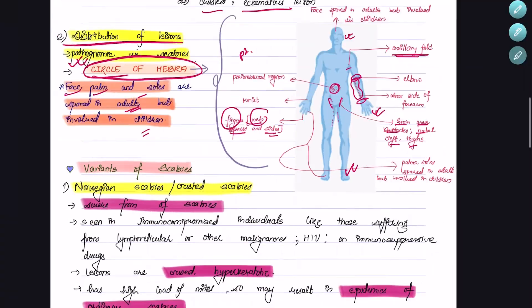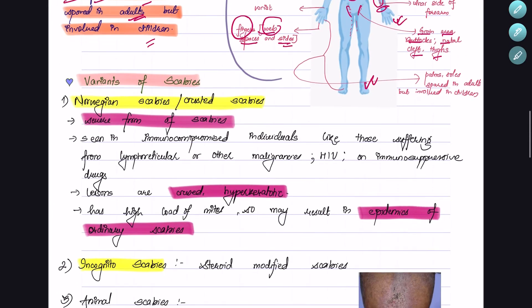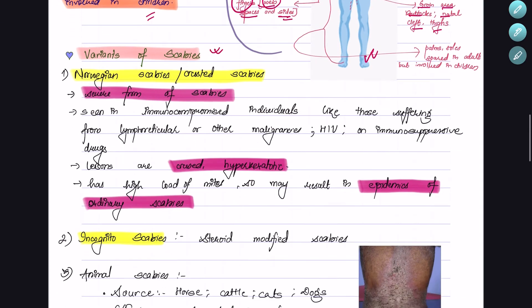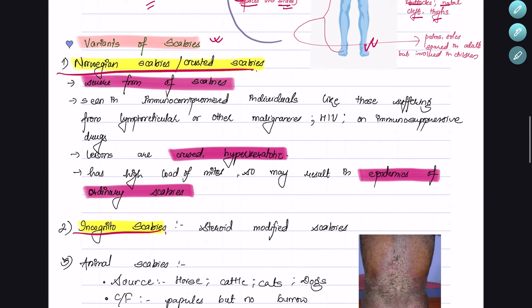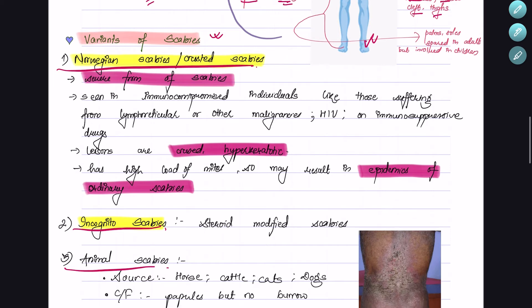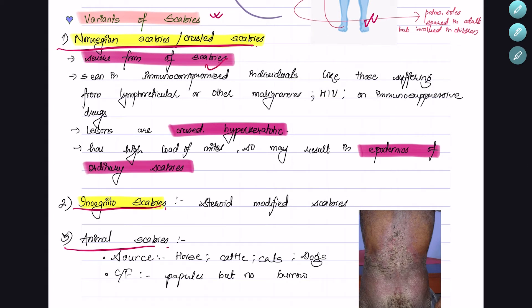Talking about the variants of scabies, there are three types: Norwegian scabies, incognito scabies, and animal scabies. Norwegian scabies, or crusted scabies, is a severe form seen in immunocompromised individuals—those suffering from lymphoreticular or other malignancies, HIV, or on immunosuppressive drugs.